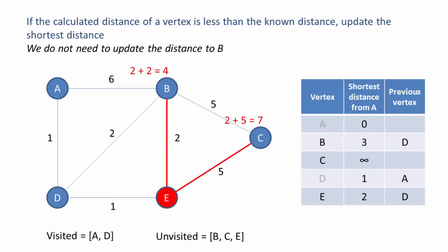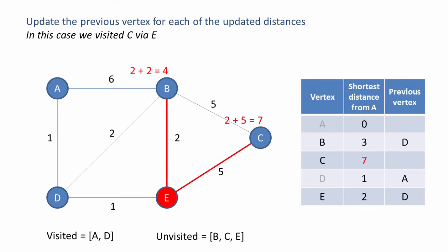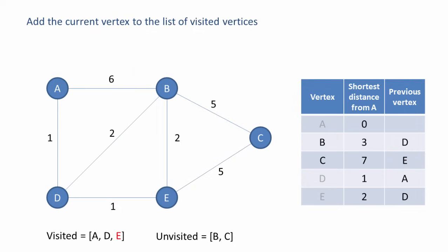If the calculated distance of a vertex is less than the known distance, we update the shortest distance. We don't need to update the distance of B this time — we've calculated 4, but the table already shows a shorter path, so we leave that alone. The total distance to C that we've just calculated is 7, and in the table it's currently infinity, so we overwrite that. Since we've updated the value for C, we update the previous vertex for C — we visited C via E. We then add E to the list of visited vertices.